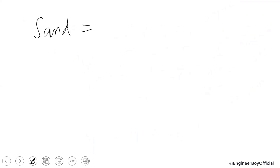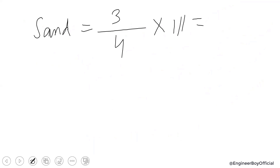Next, we determine the quantity of sand using the same formula: ratio of sand (3) divided by the sum of ratio (4), multiplied by the dry mortar (111 cft). This gives approximately 83 to 84 cft of sand.